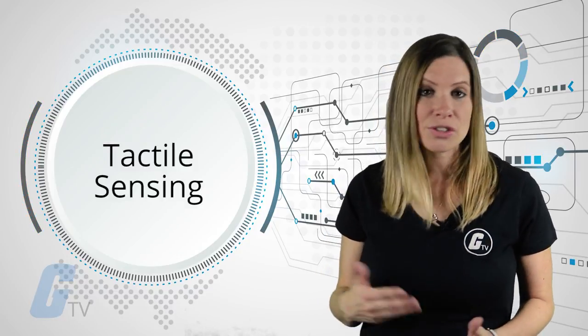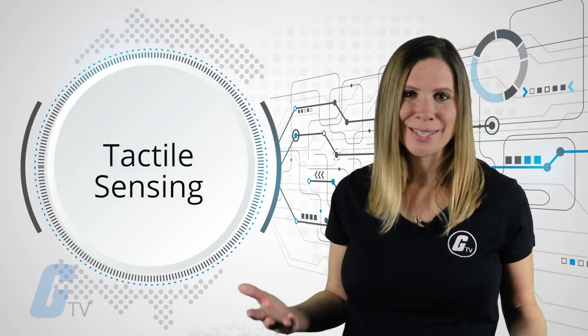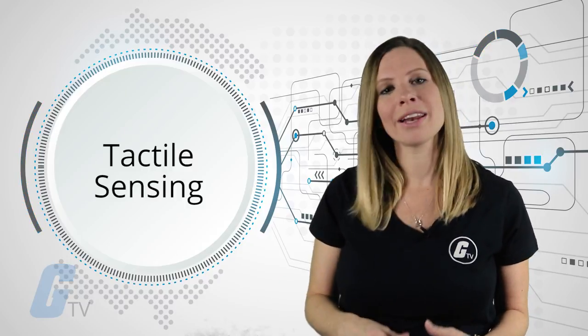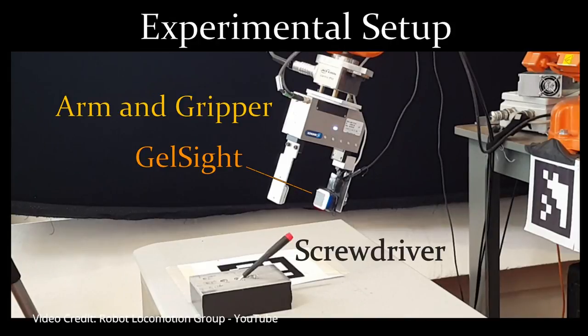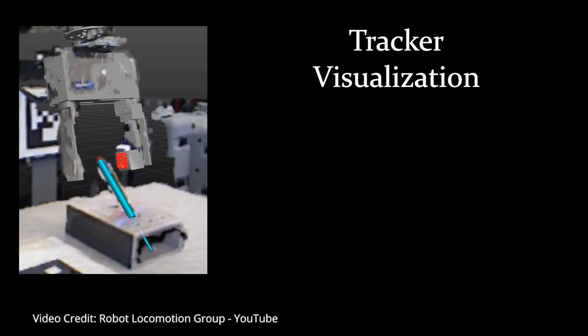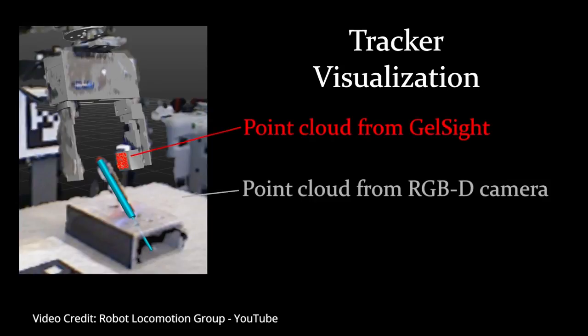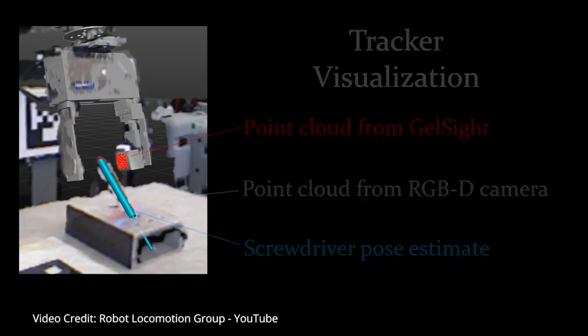Tactile sensing can also aid robots in distinguishing similar looking objects from one another. Further tests involving gel-site and the proper algorithms have allowed researchers and their robot to grasp a small screwdriver, remove it from a holster, and then return it.